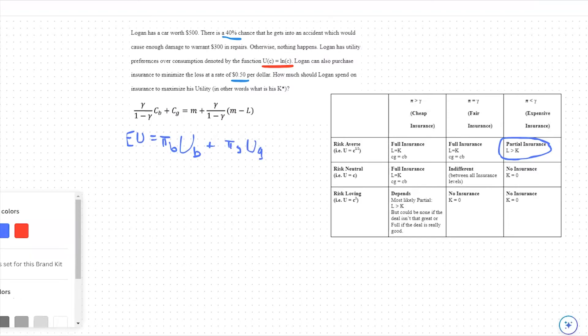In this specific example, that would be expected utility is equal to the 40% chance that the loss occurs times the utility in the bad state, which we're going to denote by the natural log of consumption in the bad state, plus our 60% chance that the good state occurs times our natural log of consumption in the good state. The reason we know this to be 60% is that there's only two things that could occur, either the bad state or the good state. So we will always have 100% chance of one of the two occurring.